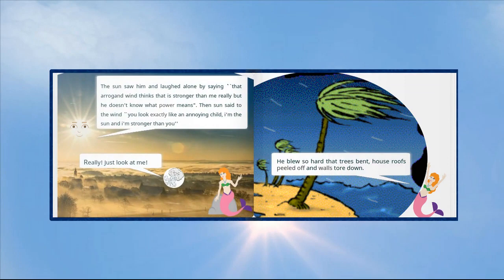The sun saw him and laughed alone by saying, that arrogant wind thinks that he's stronger than me, really, but he doesn't know what power means. Then the sun said to the wind, you look exactly like an annoying child. I'm the sun and I'm stronger than you.